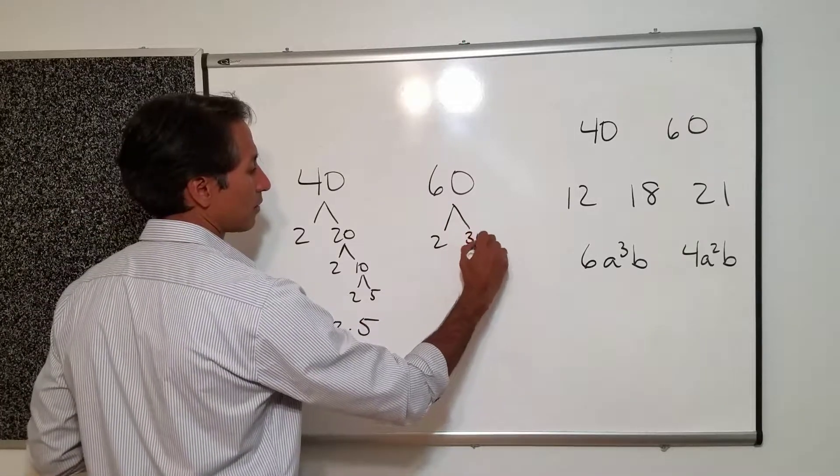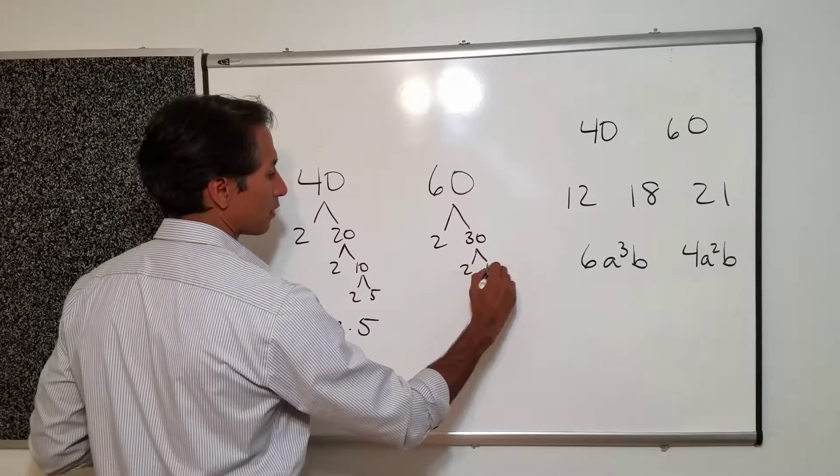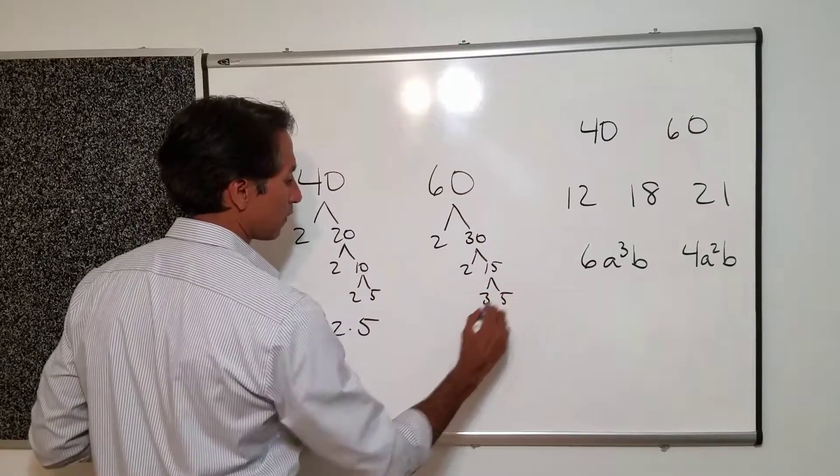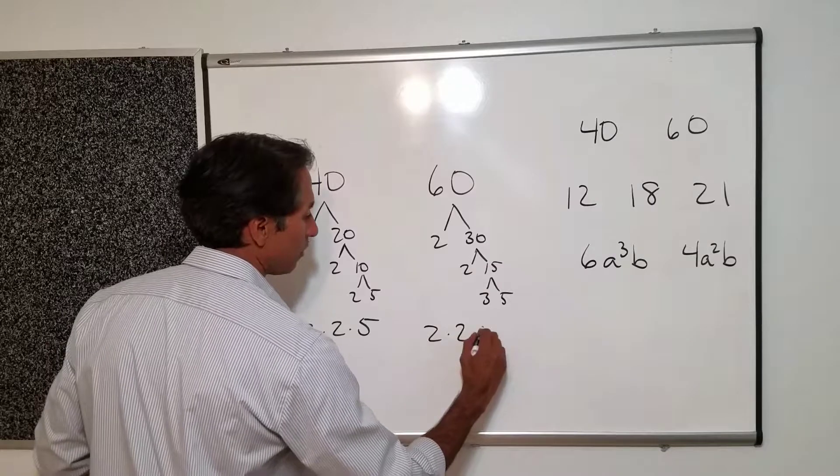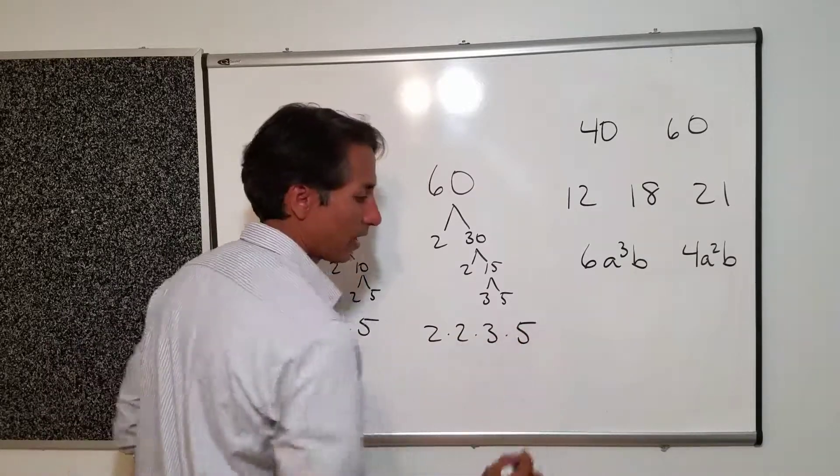A 60 is a 2 times a 30, 2 times 15, 3 times 5. So I have a 2 and a 2 and a 3 and a 5.